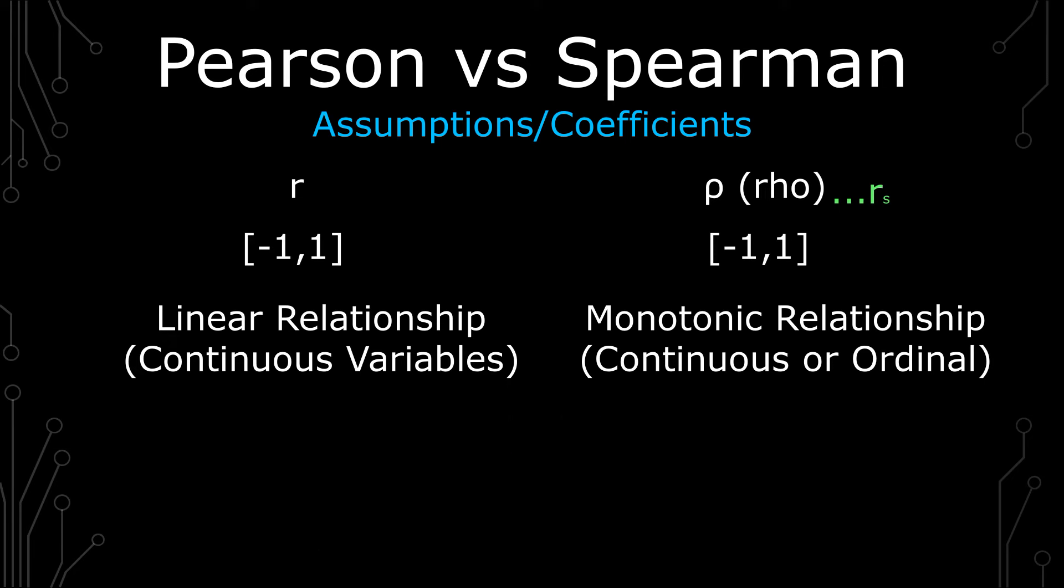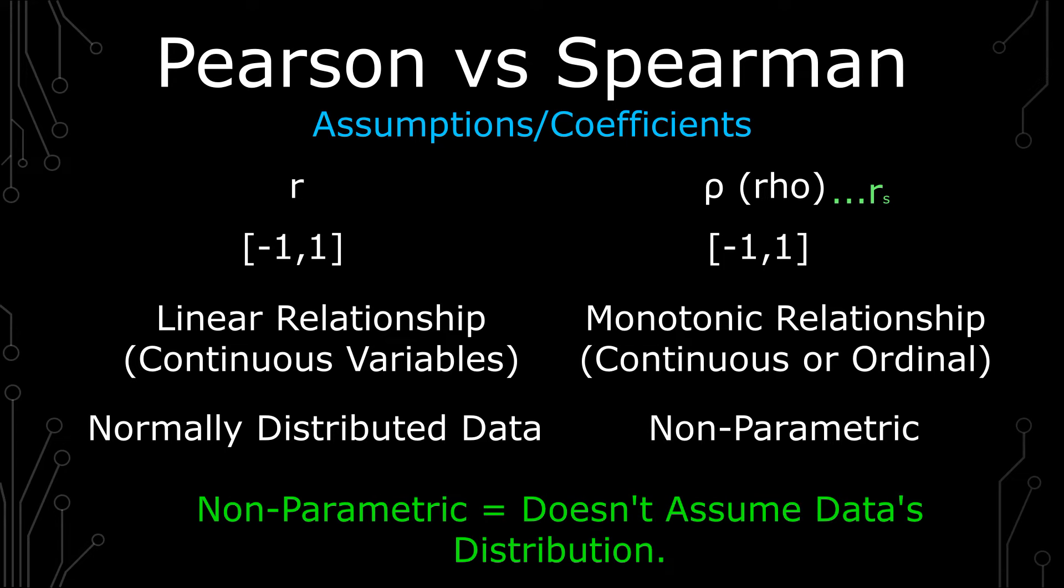Pearson is normally distributed. Spearman is nonparametric. So what does that mean? Nonparametric means that it doesn't assume a distribution. It's great for when you have a relatively small sample, you're not necessarily able to use the central limit theorem.